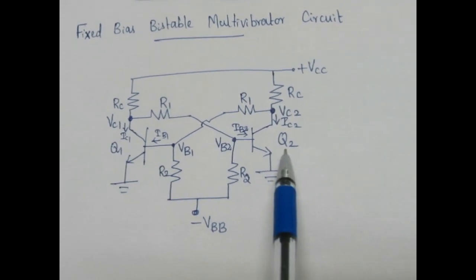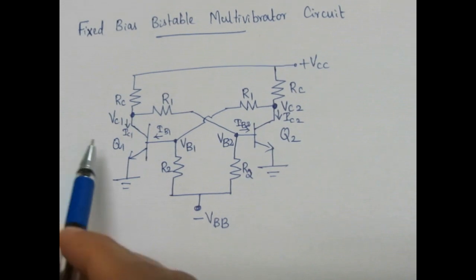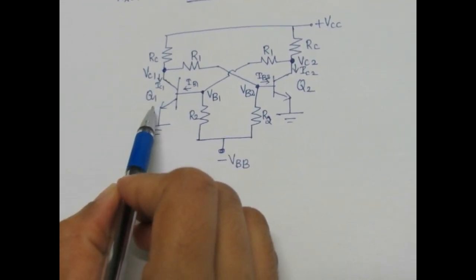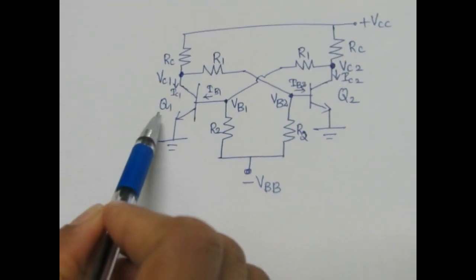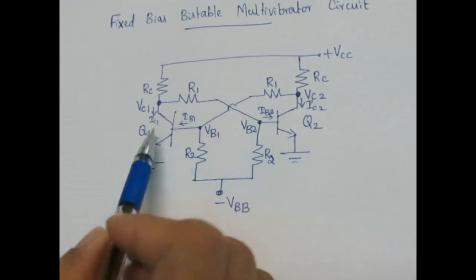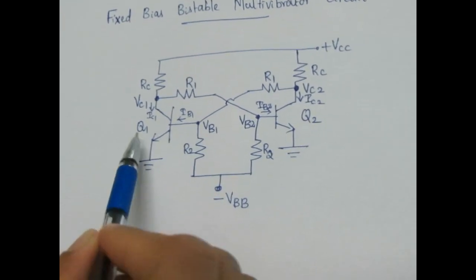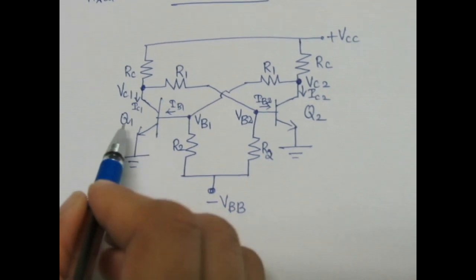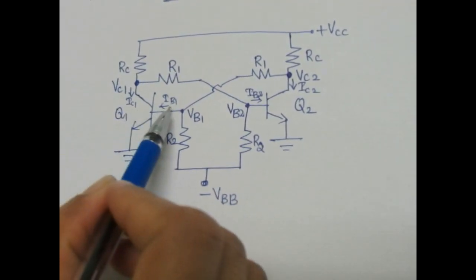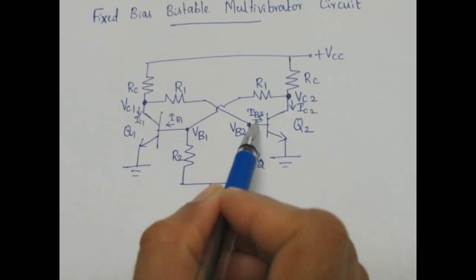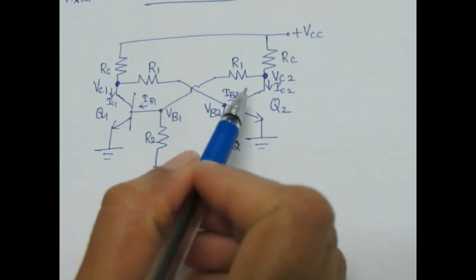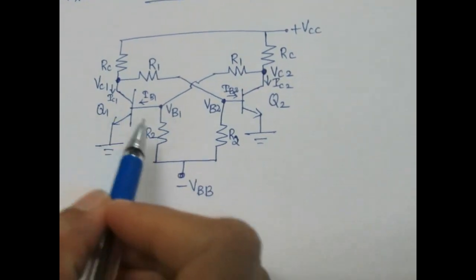Mark all the collector voltages, base voltages, collector currents, and base currents of Q1 and Q2 transistors. In a bistable multivibrator it has two stable states: either Q1 is ON and Q2 is OFF, or Q2 is ON and Q1 is OFF. We have to find VC1, IC1, IB1, VB1, VB2, IB2, VC2, and IC2 — these parameters are called the stable state voltages and currents.